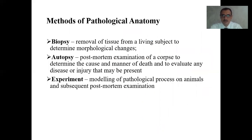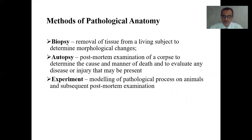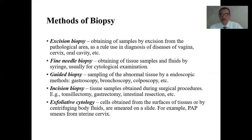We use three methods in pathological anatomy: biopsy, autopsy, and experiment. Biopsy is the removal of tissue from a living subject to determine morphological change. Autopsy is post-mortem examination of a corpse to determine the causes and manner of death and to evaluate any disease or injury that may be present. Experiment is the modeling of pathological processes in animals and subsequent post-mortem examination. Methods of biopsy include excision biopsy — obtaining samples by excision from the pathological area — as a rule used in diagnosis of diseases of vagina, uterine cervix, oral cavity, etc.